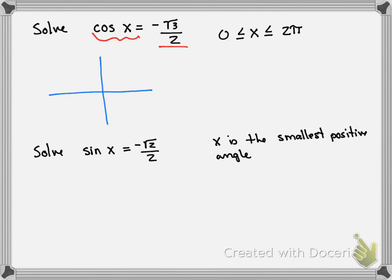The x values that have this show up in quadrants 2 and 3. Both of these reference triangles have the same negative square root of 3 over 2 as the x.